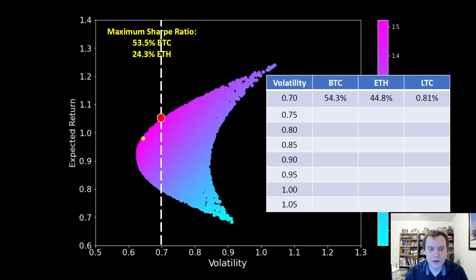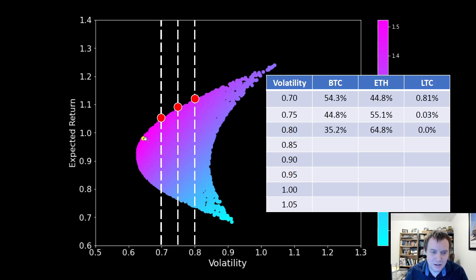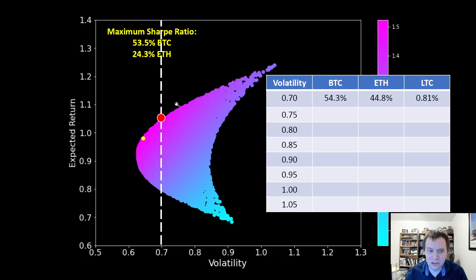Now, let's talk about something a little bit more useful. If you had $1,000, how would you divvy it up? It depends on what your risk tolerance is and how much volatility you're willing to take on. If you want to have a volatility of 70% instead of 65%, that would put you at 54% Bitcoin, 45% Ethereum, and 0.81% Litecoin. For 75% volatility, you're getting less and less percentage of Bitcoin, 44.8% versus 55.1%.